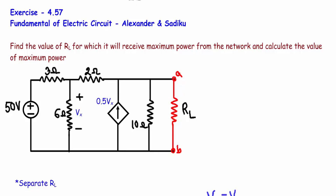Here is another example of the maximum power transfer theorem in which the circuit contains a dependent source. We have to calculate the value of the load resistor RL for which it will receive maximum power, and we also have to calculate that value of maximum power.